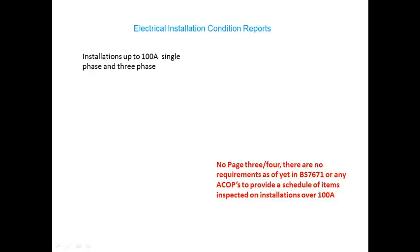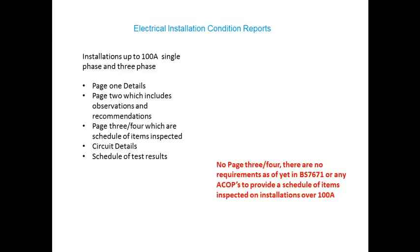The first report available is for installations up to a hundred amps single phase and three phase, although not exclusively domestic. Pages 1 and 2 are effectively the old pages 1, 2 and 3 of a periodic inspection and deal with client details, site details, extents, limitations, operational limitations — which is something new — and also observations and recommendations, which have significant changes regarding coding that will be dealt with in future videos.